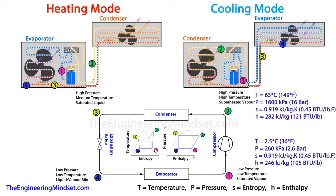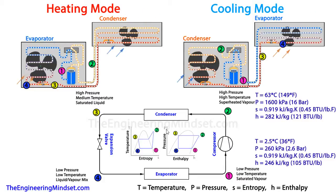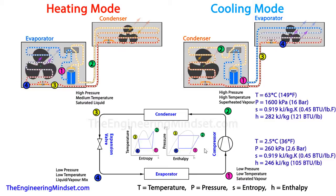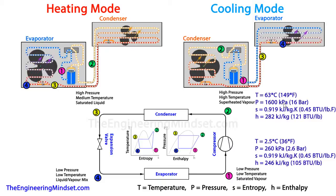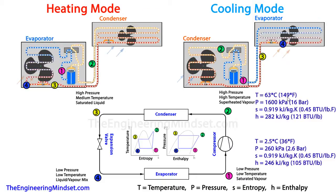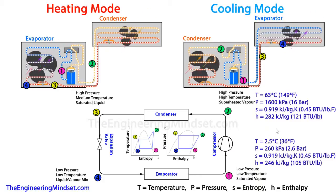At Point 2, after the compressor, we can see from the charts that temperature, pressure, and enthalpy all increase. The pressure has raised to 1600 kPa (16 bar), resulting in a temperature of 63°C (149°F). The entropy remains roughly the same, but enthalpy has increased to 282 kJ/kg (121 BTU/lb).